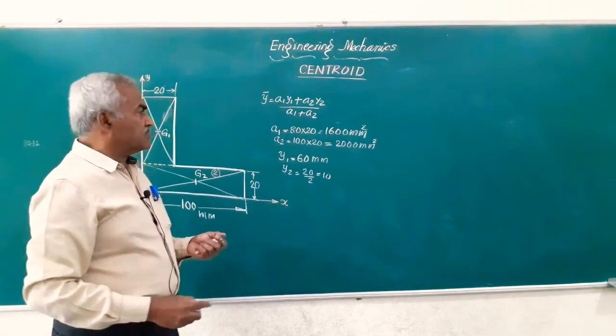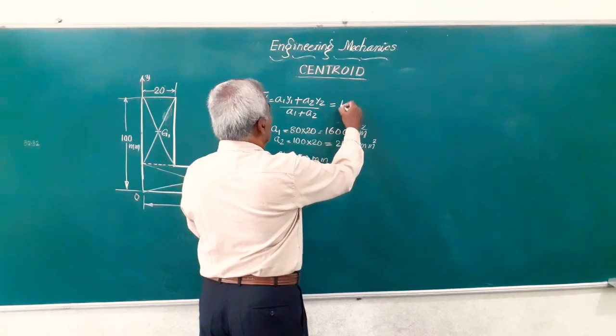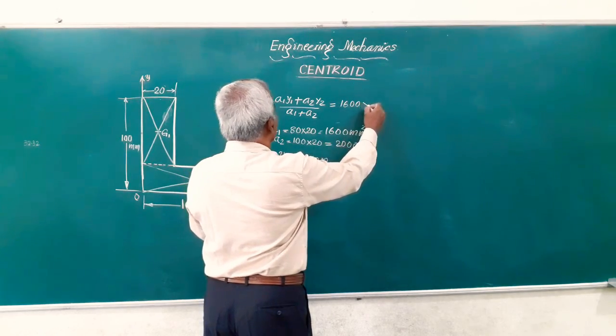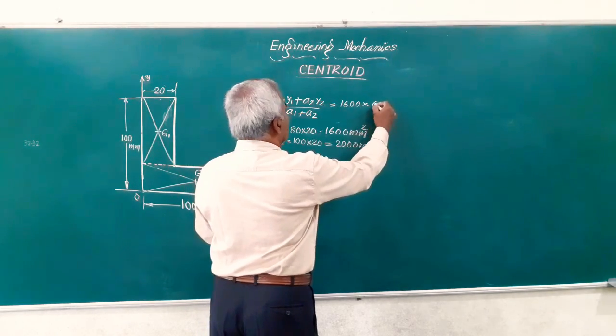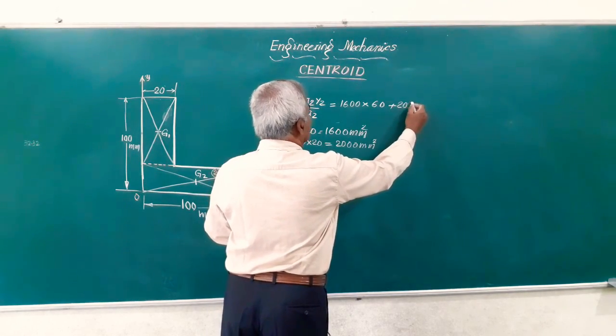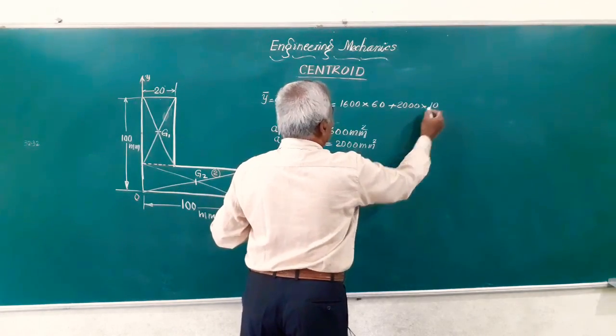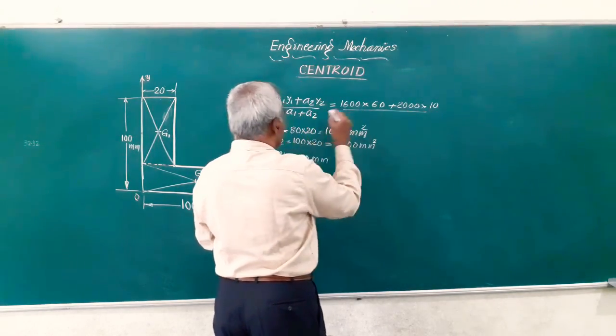Let us make this substitution and get the answer for y bar. That is 1600 is a1, y1 is 60, plus area of the second figure is 2000 multiplied by y2 is 10, divided by a1 plus a2.